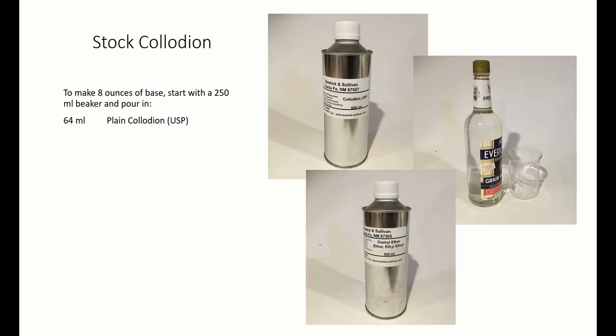Stock collodion. To make 8 ounces of base, start with a 250 milliliter beaker and pour in 64 milliliters of plain collodion. This is the thick syrupy liquid. Then, in a separate beaker,